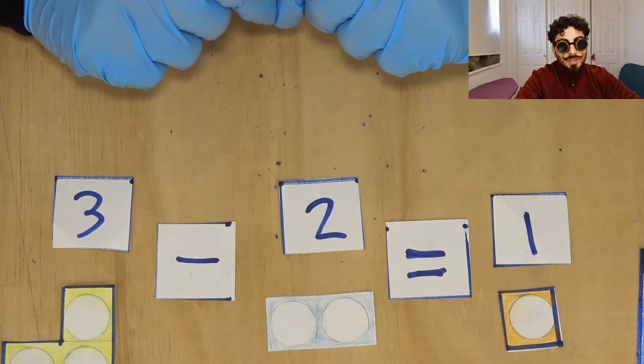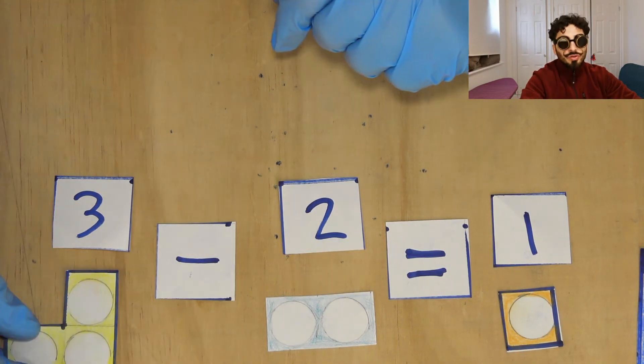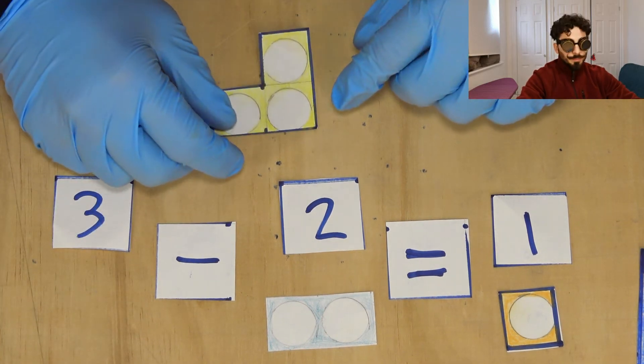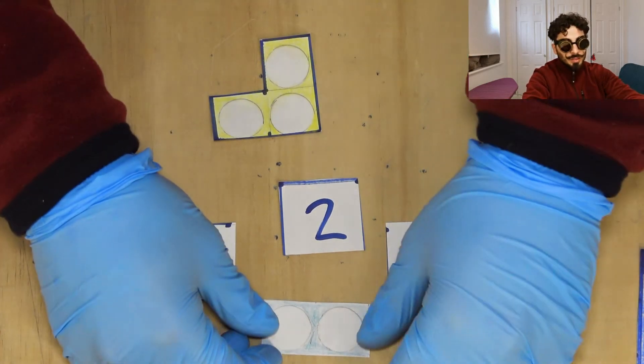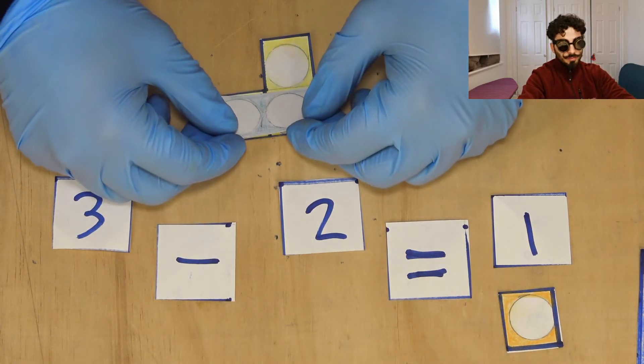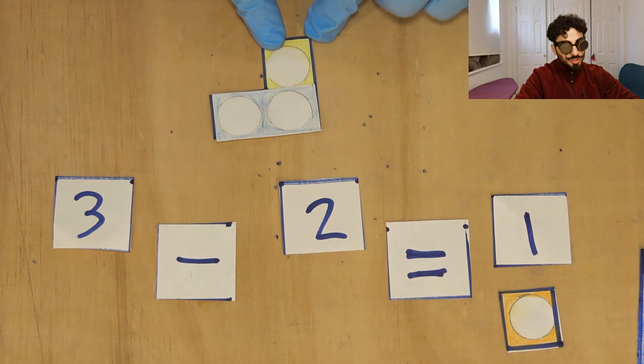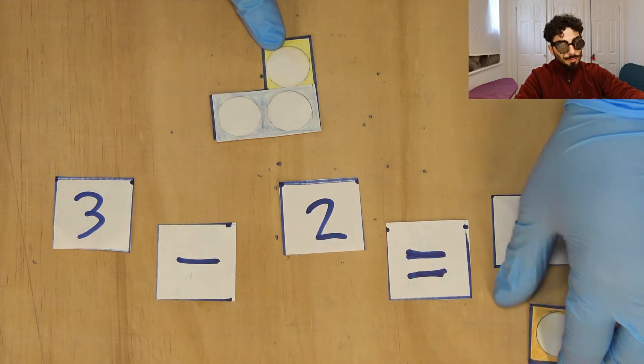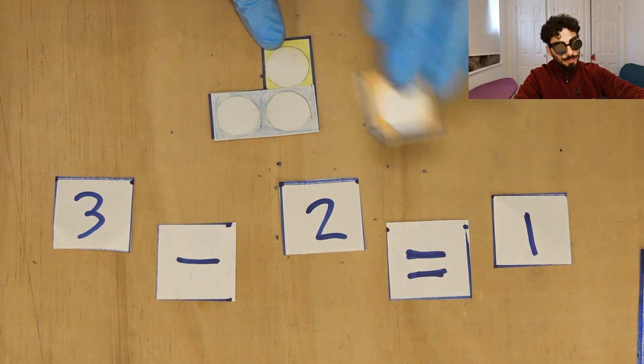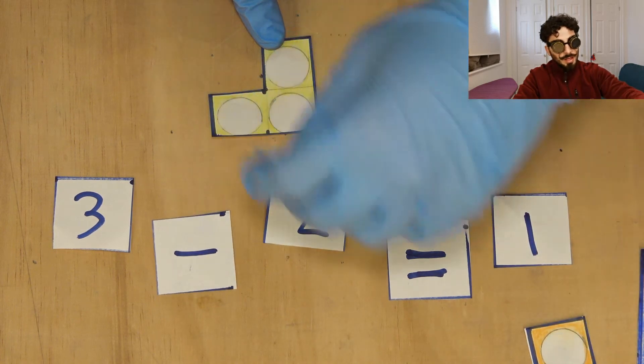How do we show this or how do we explain this using Numicon blocks? The way you do that is if you put the three and then get the two and cover up your three, you count what's left over which is one, as you can see, and that's how we get our answer.